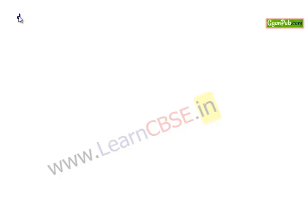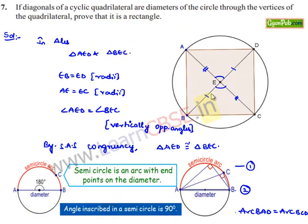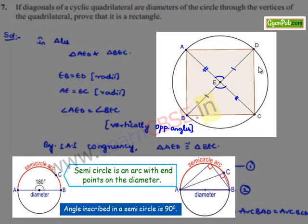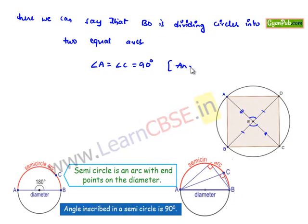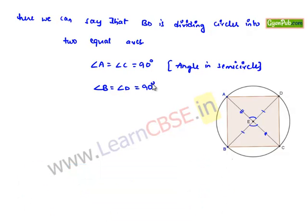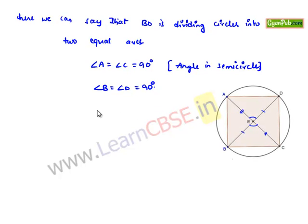Therefore BD is dividing the circle into two equal arcs, meaning arc BCD and arc BAD each form a semicircle. We know that the angle in a semicircle is equal to 90 degrees. Therefore angle A equals angle C equals 90 degrees. Similarly, we get angle B equals angle D equals 90 degrees. Since all angles are 90 degrees and opposite sides are equal, we can say that quadrilateral ABCD is a rectangle.